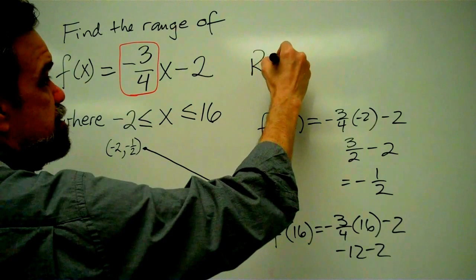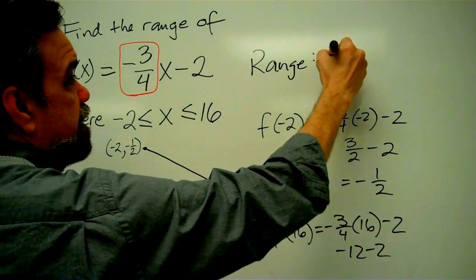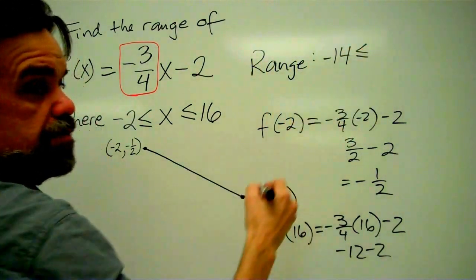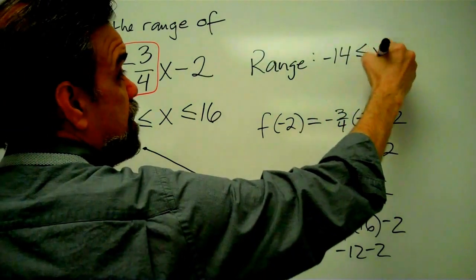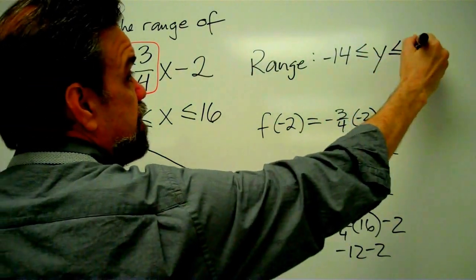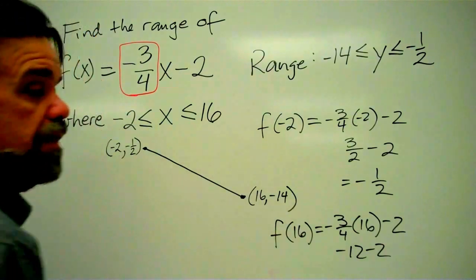So our range here is negative 14 is less than or equal to y, which is less than or equal to negative 1 half. And we're done.